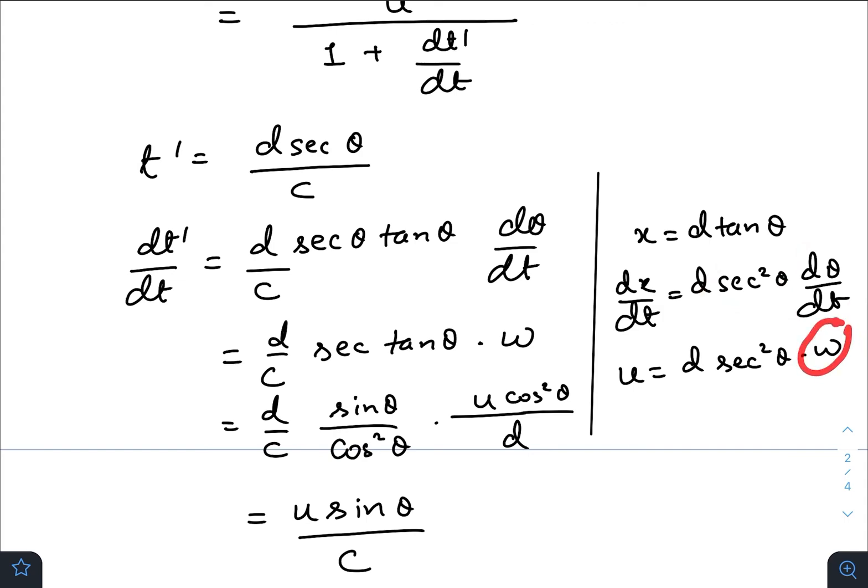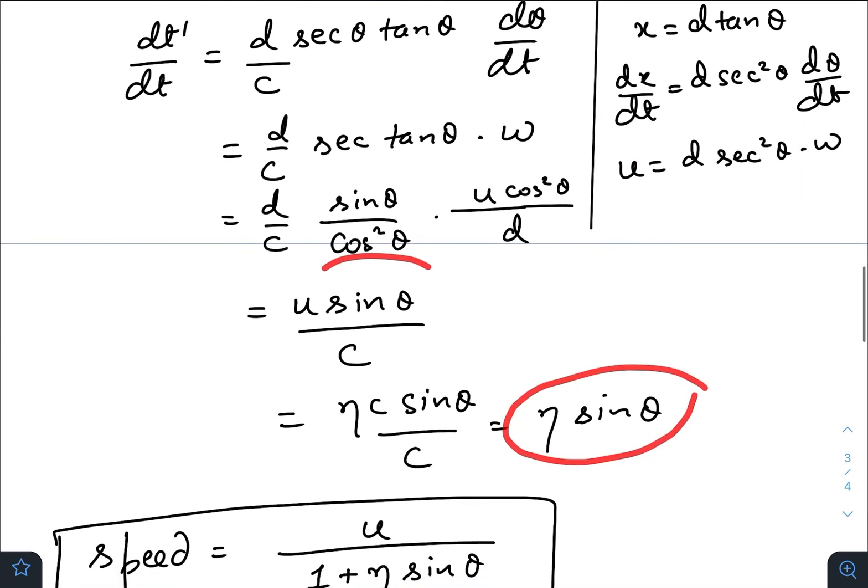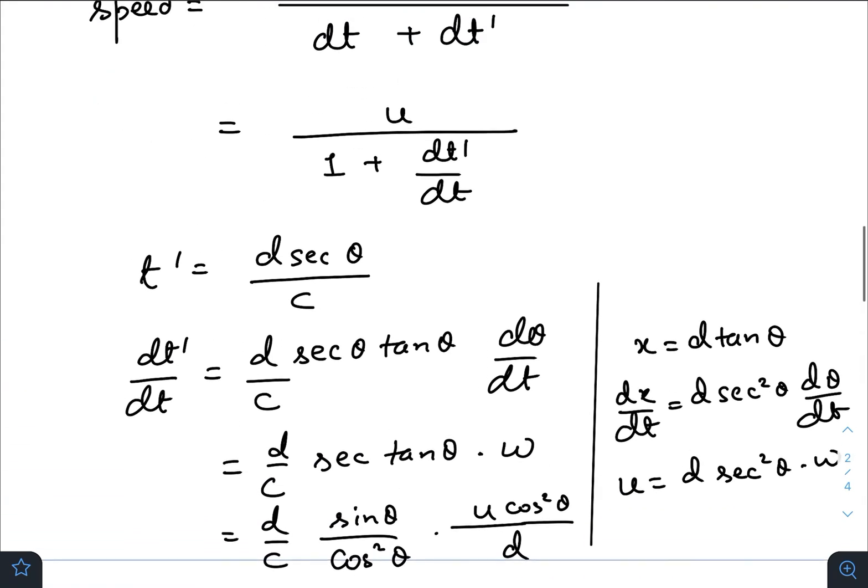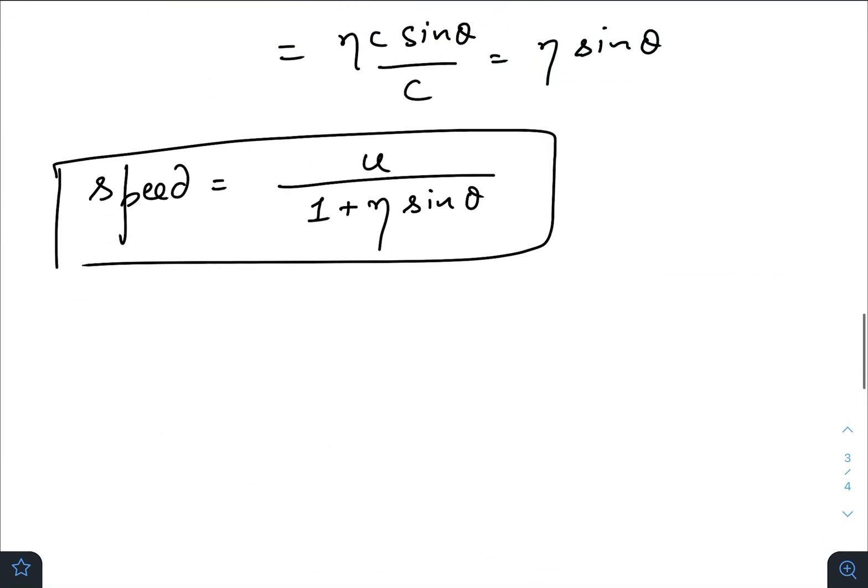Now just put the angular velocity from here in this equation. Solving it, we get η sin θ. Just put the value of dt prime by dt, that is η sin θ, in this expression. So the final expression for the speed of the UFO observed by the observer standing at the origin O will be u divided by 1 plus η sin θ.